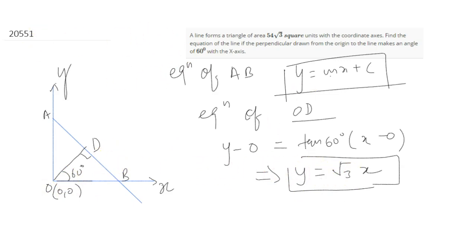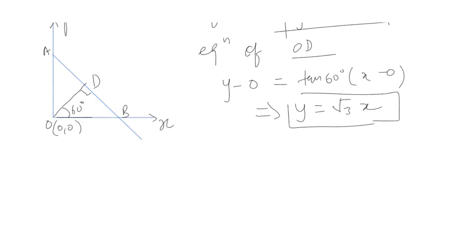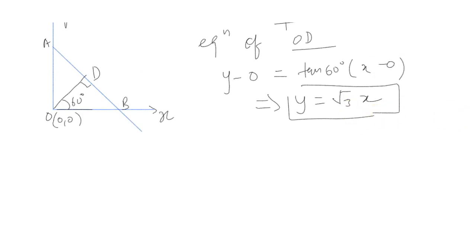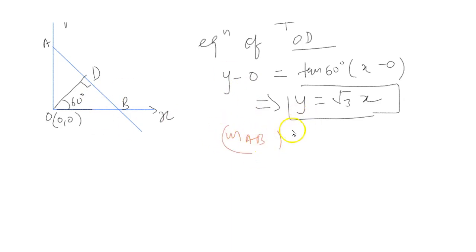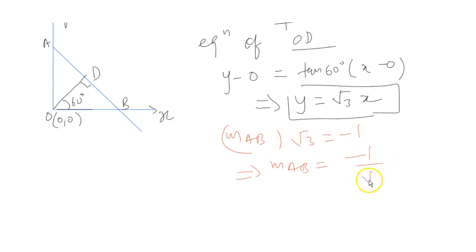We know that OD is perpendicular to line AB. When two lines are perpendicular to each other, the product of their slopes is -1. So slope of AB multiplied by slope of OD (which is √3) equals -1. Therefore, slope of AB = -1/√3. So we've found the value of m, that is -1/√3.